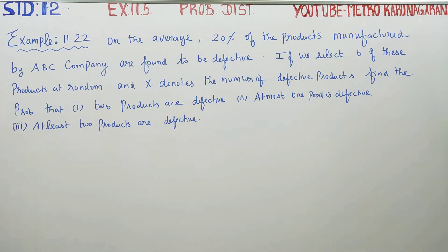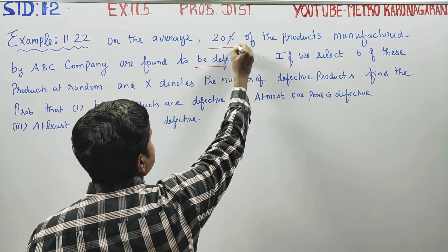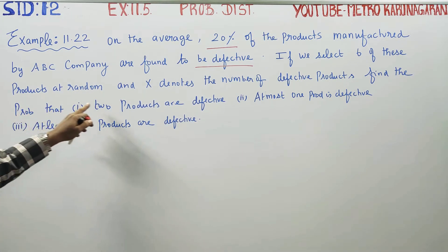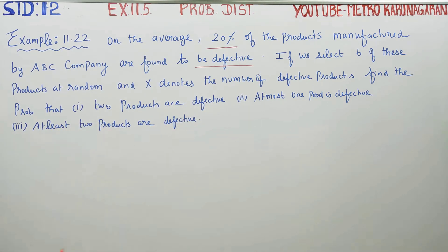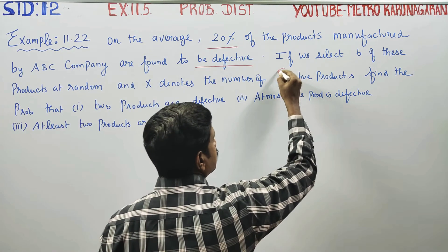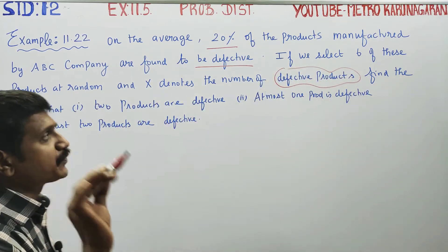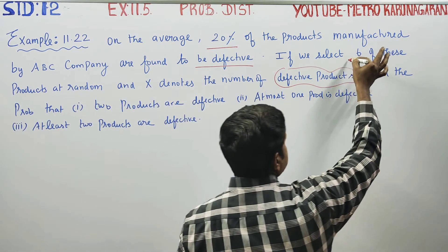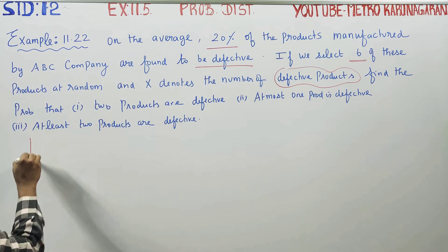On an average, 20% of the products manufactured by ABC company are found to be defective. If you select 6 of the products, and X denotes the number of defective products, find the probability. The target is defective products. How many products are checked? 6 products are checked, so n is equal to 6.